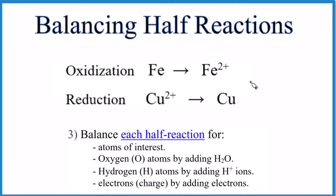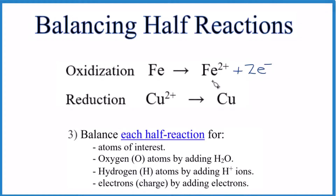We do need to balance the electrons — the charge. For iron, we have zero on the left and two plus on the right. Let's add two negative charges — two electrons — to the right side. Now everything on both sides equals zero; that's balanced. For copper, we have two plus on the left. We're going to add two electrons to the left side. Now the charge is balanced and we've balanced this half reaction.